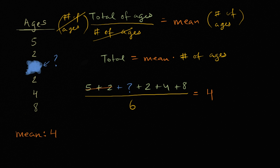So five plus two is seven. Five plus two is seven. Two plus four is six, plus eight is fourteen. And then seven plus fourteen is twenty-one. So we're left with twenty-one plus question mark over six is equal to four.